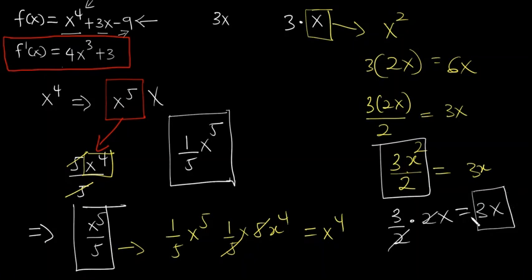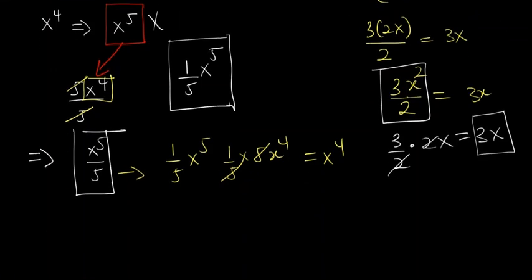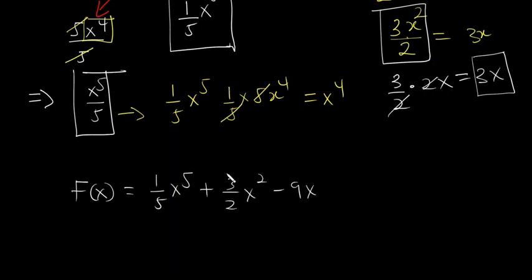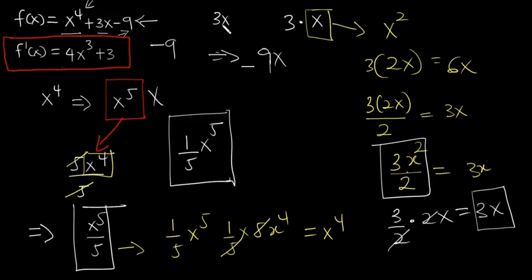For the last term we just have minus 9. The expression we integrated to get minus 9 would be minus 9x, because when you differentiate minus 9x the x becomes 1 and you just get minus 9. So at the end the function we differentiated to get f of x is: one over 5 x to the power 5 plus 3 over 2 x squared minus 9x.